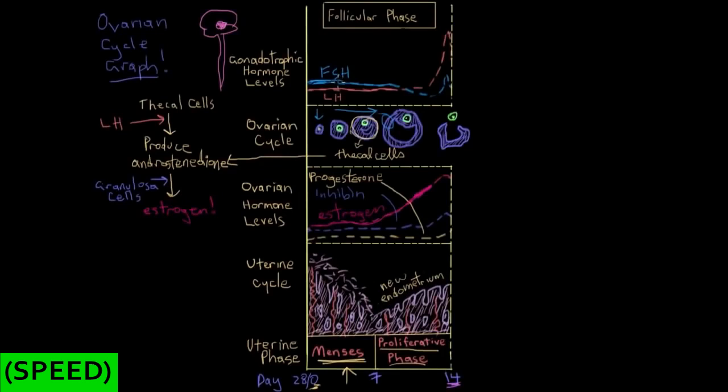Some really interesting stuff starts to happen: when the hypothalamus and anterior pituitary begin to sense that estrogen levels are super high, they begin to release less FSH and LH — you can see them dipping on the graph. That makes sense, because the point of releasing FSH and LH was to cause follicle development, and follicles make estrogen. When the brain senses lots of estrogen it means follicles are developing, so it doesn't need to continue releasing so much FSH and LH. This is negative feedback.